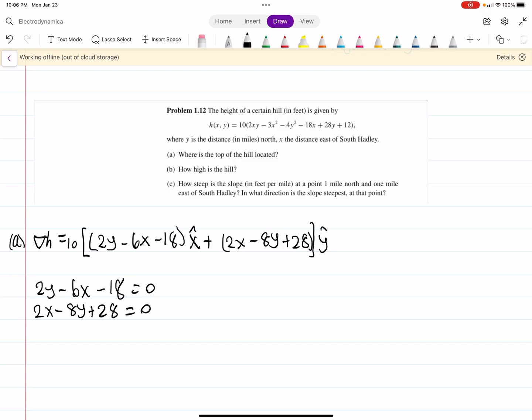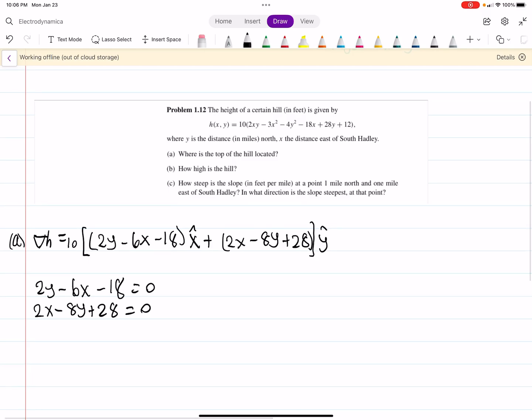So what we have here is a system of equations which you can solve for. And when you solve for this, I'm not going to do it in the purpose of time, but if you solve this simple system of equations, 2 equations 2 unknowns, you get x equals negative 2 and you get y equals 3. So it's 3 miles north and 2 miles west of that location. So that's part A.